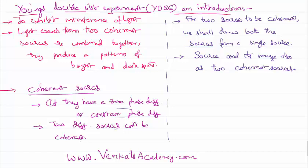Young is a scientist who has explained interference based on an experiment called the double slit experiment. In Young's double slit experiment, we have a source, and in the path of that source we keep two slits — this is slit one and this is slit two. When light is emitting from the source as crests and troughs, this light will reach the slits.